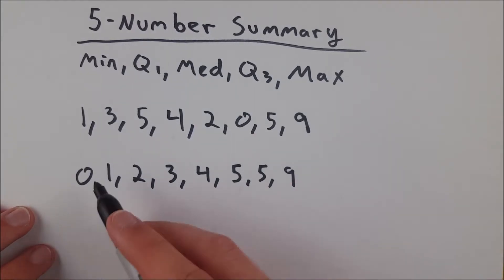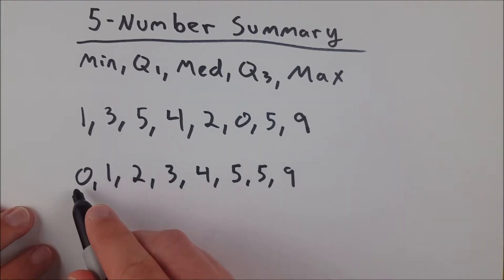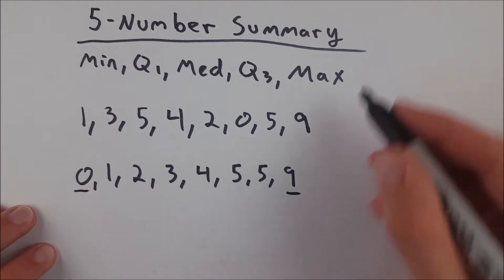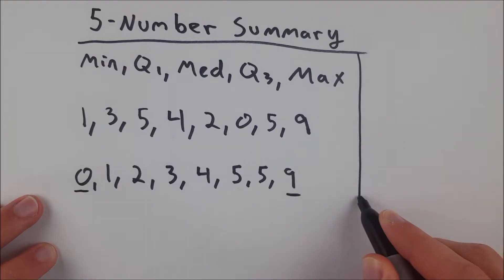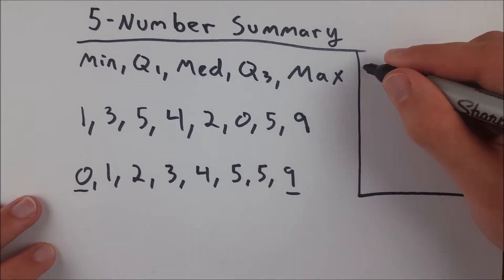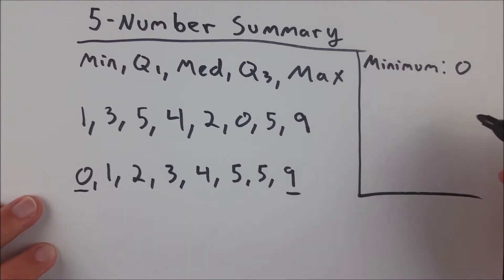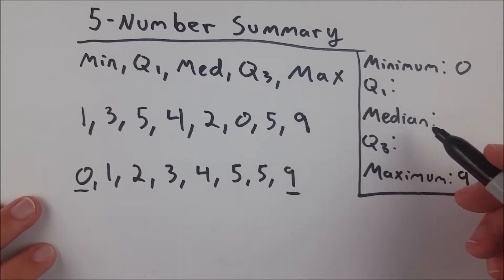So right now, two of our values for our five-number summary already jump out at us. 0 and 9. And let's put our five-number summary over here. So our minimum is 0, and our maximum is 9. Now we only have three things left.